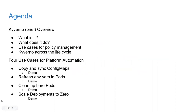A brief agenda: first, we'll cover an overview of Kyverno quickly — what it is and what it does. Then we'll look at use cases for policy management and Kyverno across the lifecycle. We'll dive into four specific use cases for platform automation teams: copying and syncing of config maps, refreshing environment variables in pods, cleaning up bare pods, and scaling deployments to zero based upon an event.